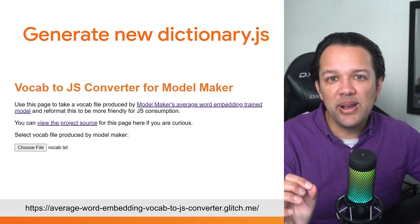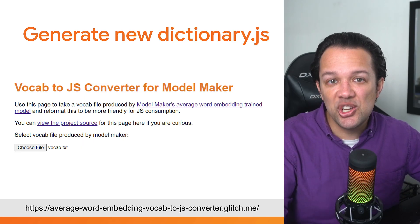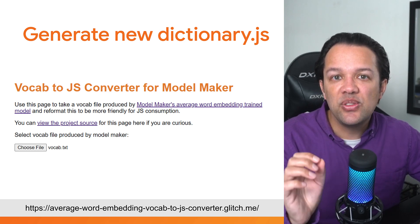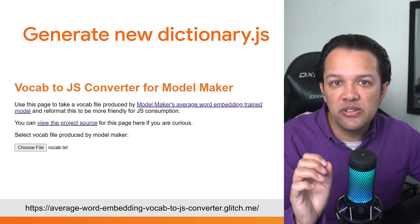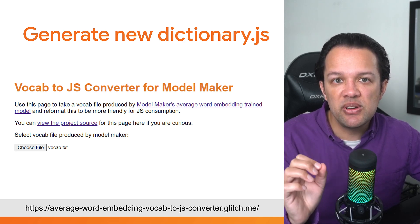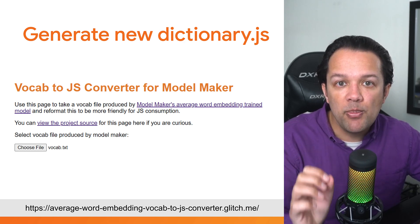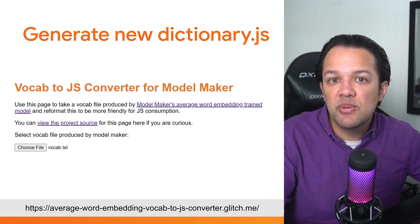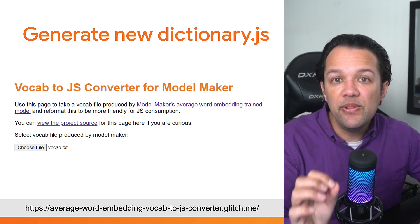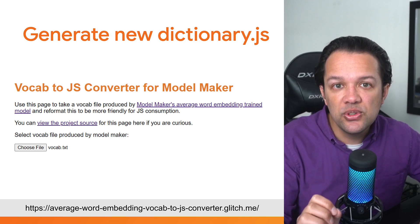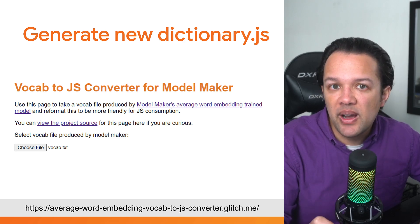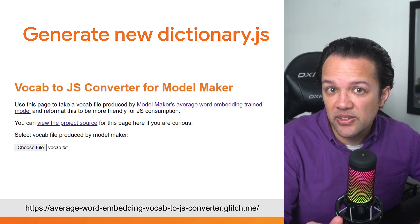At this point, the last step is to generate a new dictionary.js file. To do that, head on over to the URL shown on this slide and use the web app hosted there to generate a new dictionary.js by uploading your vocab.txt text file to it and then saving the resulting file it offers for download. Feel free to view the source to see how it transforms the text file to the required JavaScript format if you're curious.